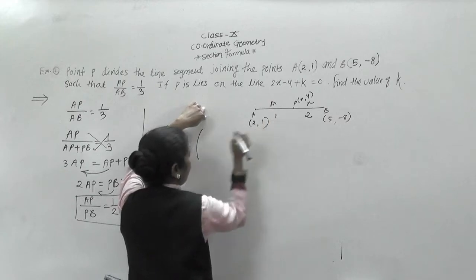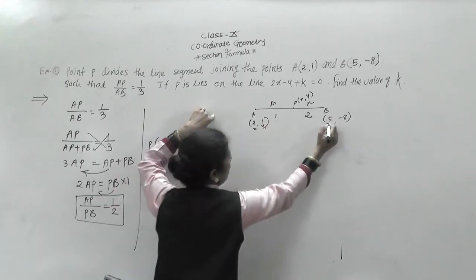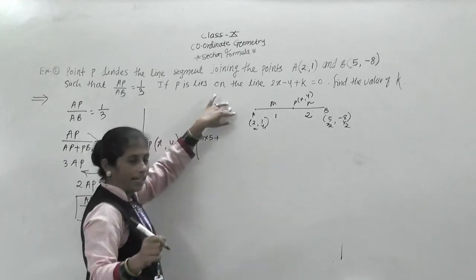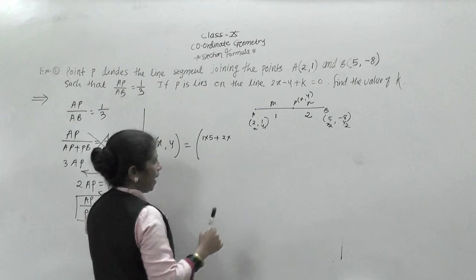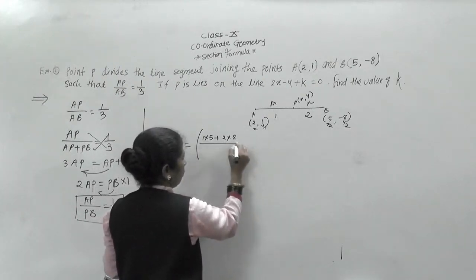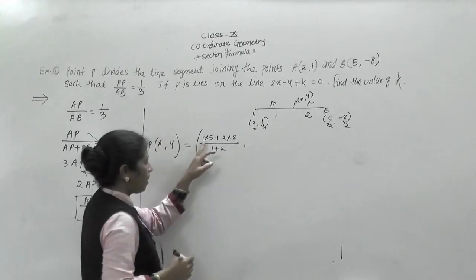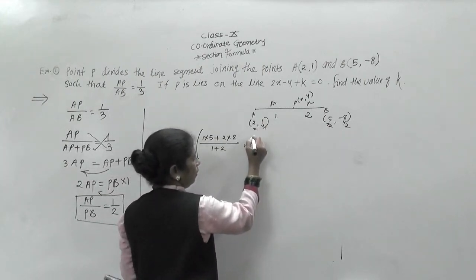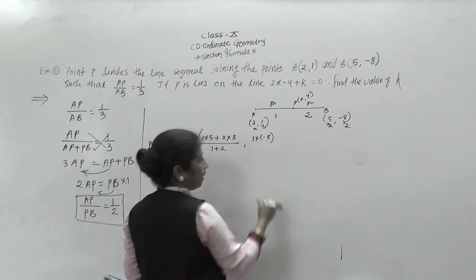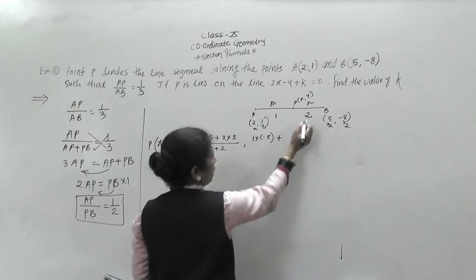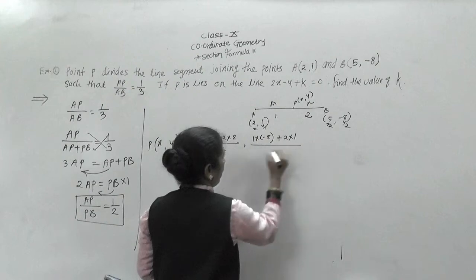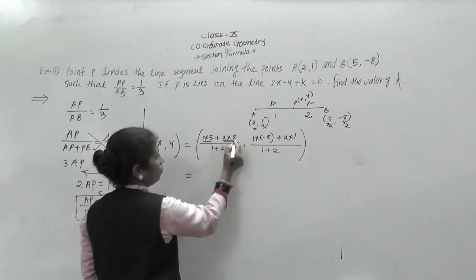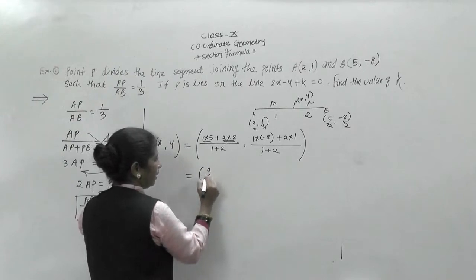Here M is 1 and N is 2. We take A as (X1, Y1) = (2, 1) and B as (X2, Y2) = (5, -8). For the X-coordinate: MX2 plus NX1 upon M plus N equals 1 multiplied by 5, plus 2 multiplied by 2, upon 1 plus 2. That gives 5 plus 4 equals 9, so 9 by 3.